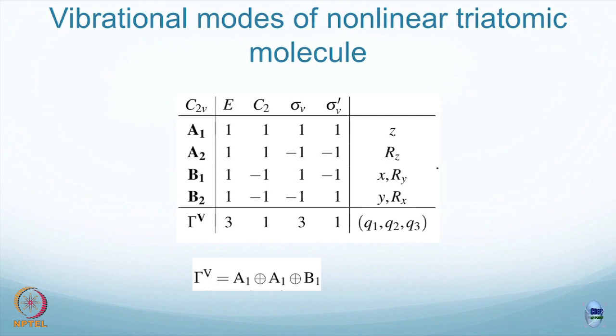P A1 on an arbitrary vector should give me a piece which is 1, 0, 0. What does that mean? This is q1. One of the vibrational modes is exactly q1. So, q1 is x1 plus x2, clear?